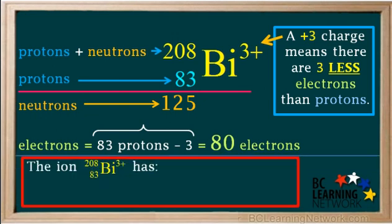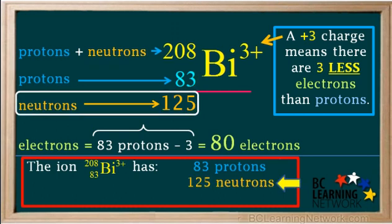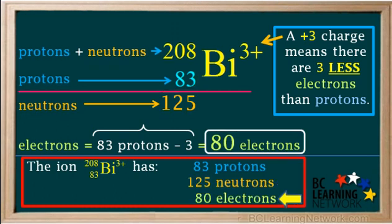So this ion has 83 protons, 125 neutrons, and 80 electrons.